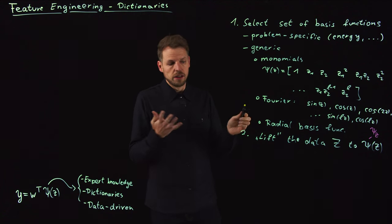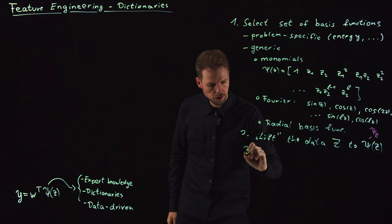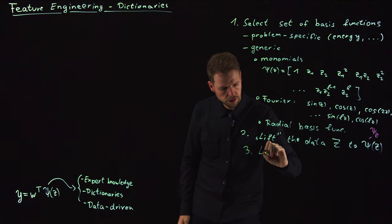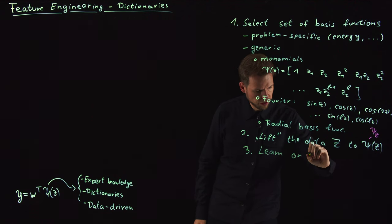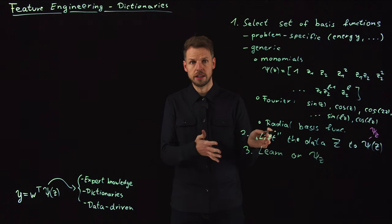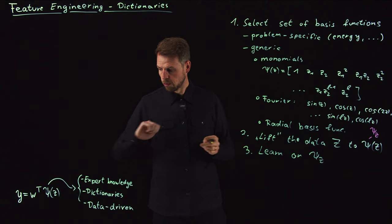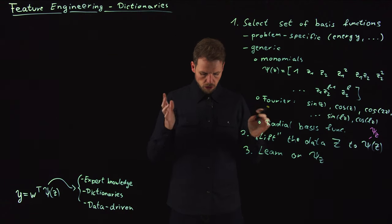And so what you can do then is simply apply your favorite linear learning technique. So what you do is learn on your data Psi Z. Very nice. You can use linear regression. The problem becomes again a closed form solution problem of training these weights. So very nice.